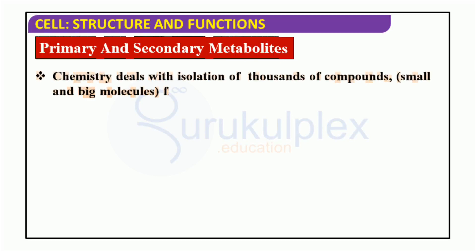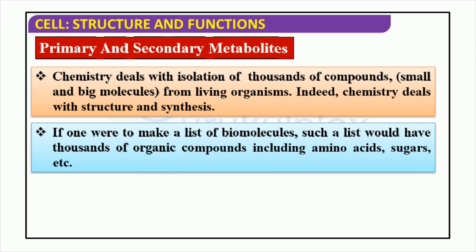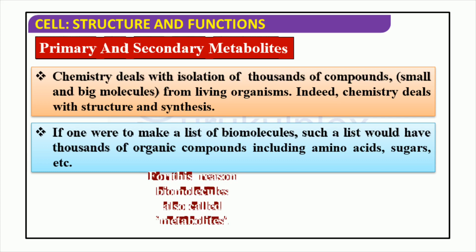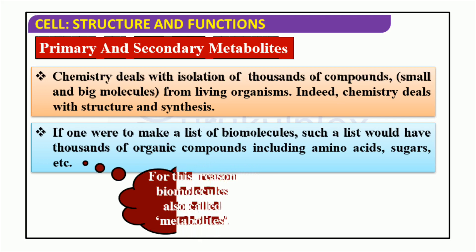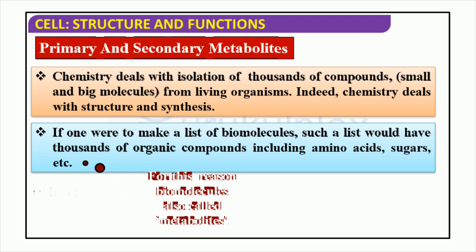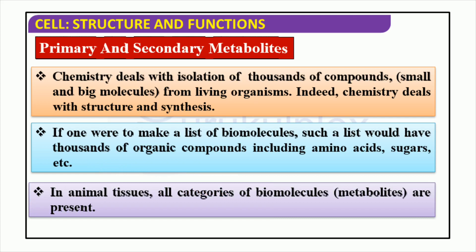Biomolecules are the building blocks of life, with thousands of them. Chemistry helps us understand their structure and synthesize them, often referred to as metabolites. They can be divided into two categories: primary metabolites and secondary metabolites. Primary metabolites are critical to the survival of living organisms and take part in metabolism, while secondary metabolites exist in nature but are non-essential for life.